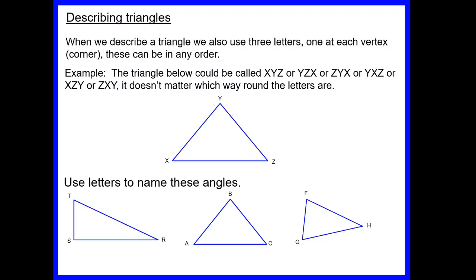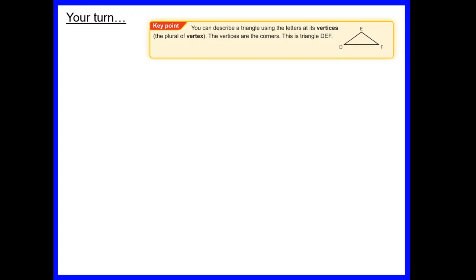Any of the solutions shown are acceptable for each triangle. The key point: to describe a triangle we use the letters at its vertices — the corners. So we could call a triangle DEF or any other combination of those three letters.